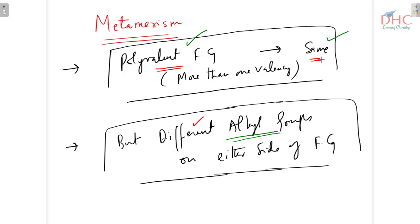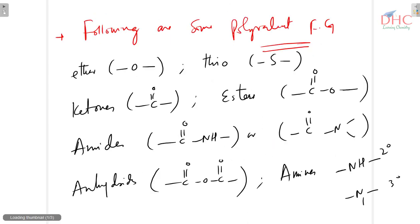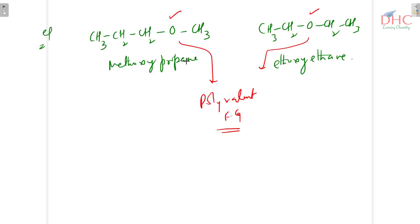The first condition is satisfied. Now the second condition: alkyl groups on either side must differ. In the first compound, the right side is methyl and the left side is propyl. In the second compound, both sides are ethyl. So alkyl groups differ on either side — propyl and methyl in one, ethyl and ethyl in the other. Therefore, these isomers are called metamers.